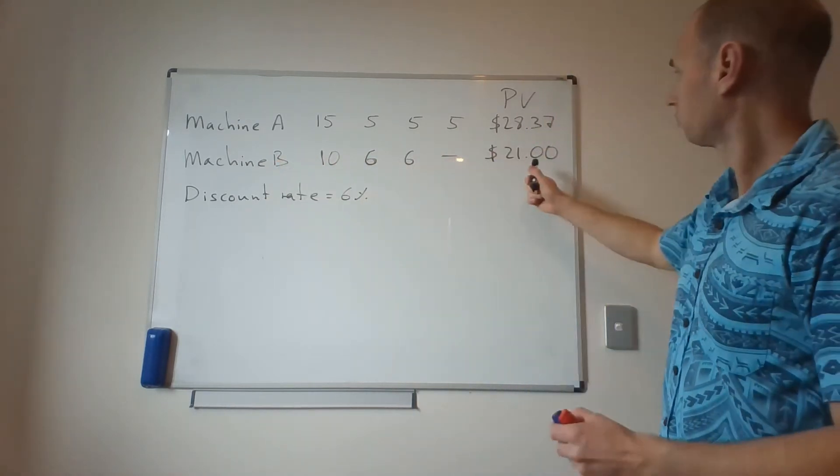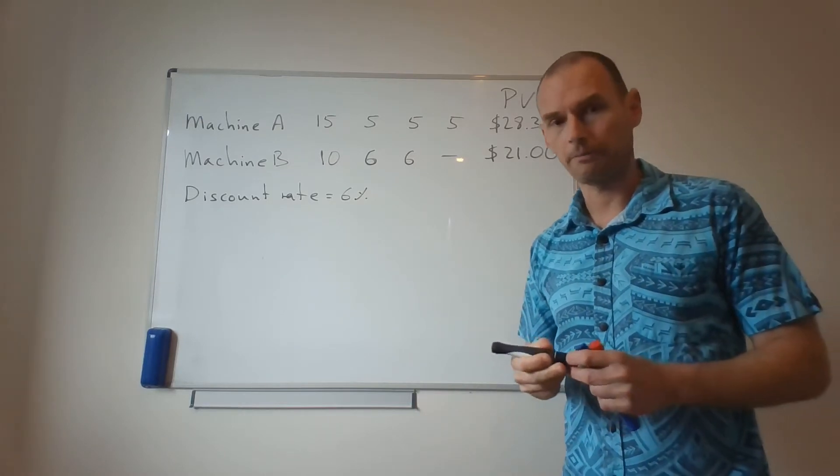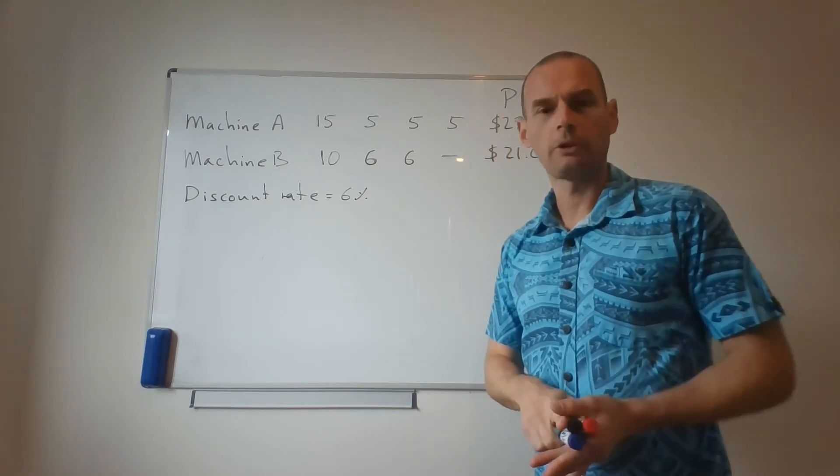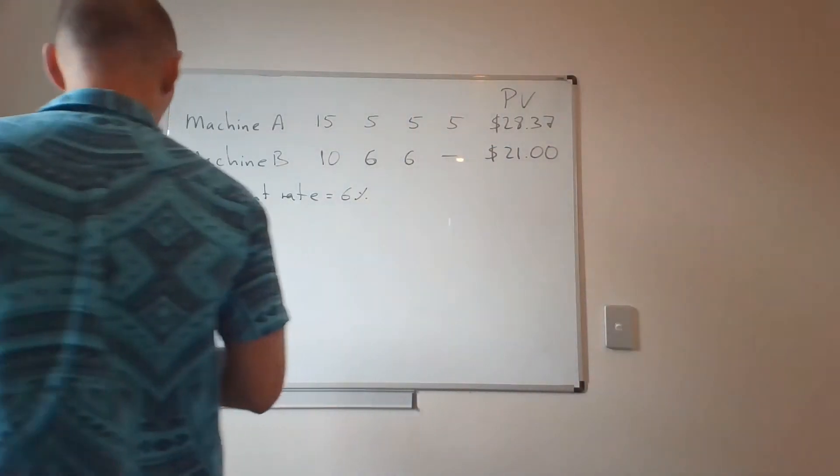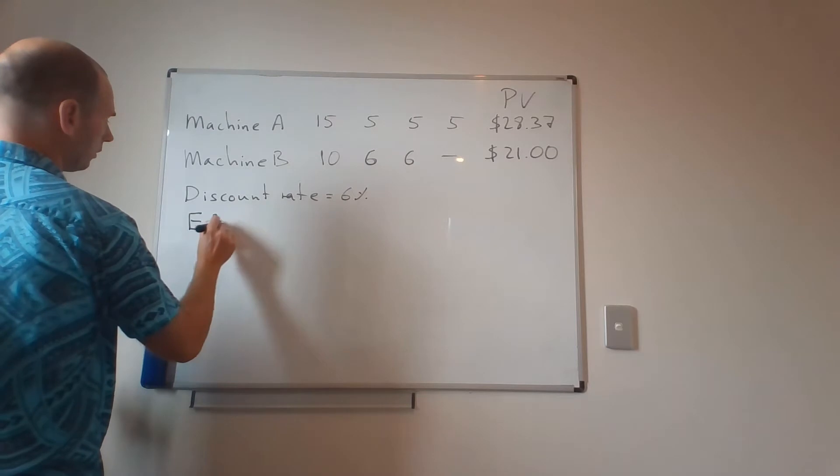Machine B is cheaper, obviously, but it lasts you one year less. How do we approach this problem? We approach this problem with something that is called equivalent annual cost.